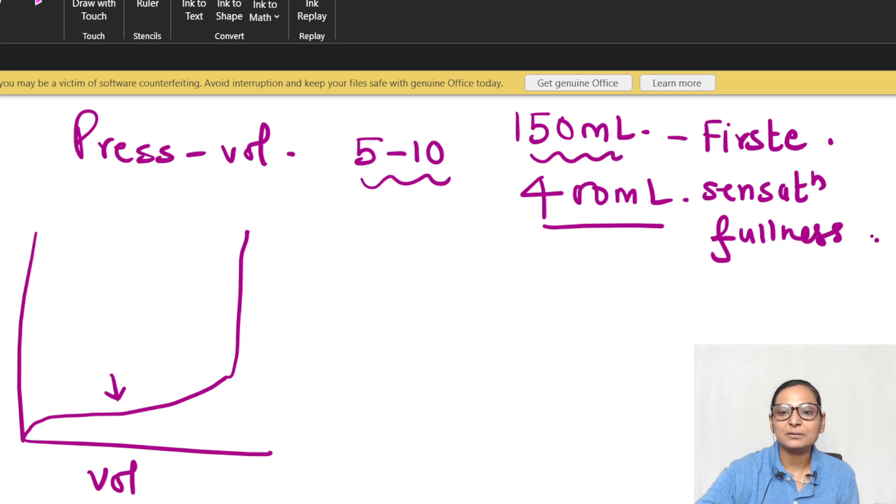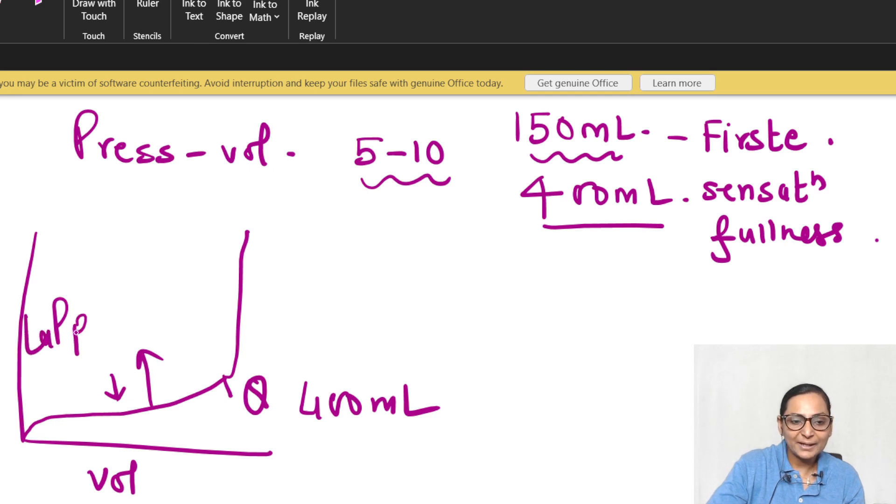But when the urine accumulation will be 400 ml, that is the time when there is a sensation of fullness of bladder and elicitation of the micturition reflex. As the volume increases, the pressure does not rise as it follows the Laplace law. This plateau is representation of the law of Laplace.